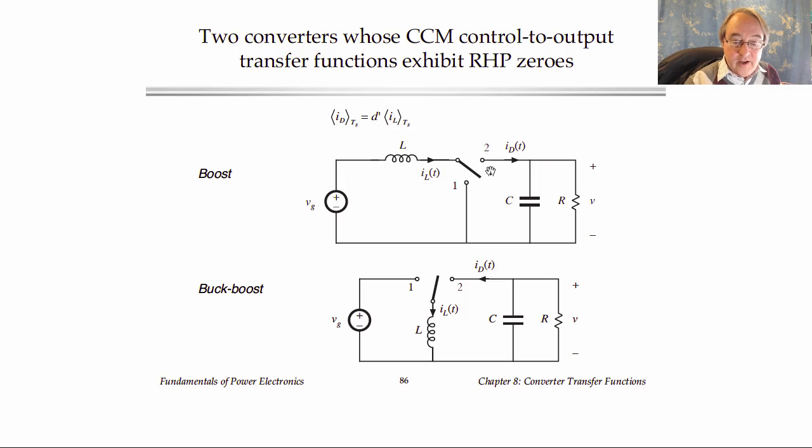Well, it really comes out of how the switching occurs to connect the inductor to the output. In each of these converters, the current that drives the output coming out of the converter is a diode current. And the diode conducts when the transistor is off. In fact, we can write the equation for the average value of the diode current, and it is D prime times the inductor current. So the inductor current flows through the switch to the output during the D prime interval. And this is true in both the boost and the buck-boost converters.